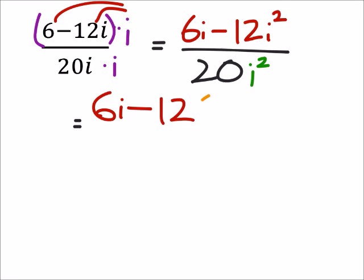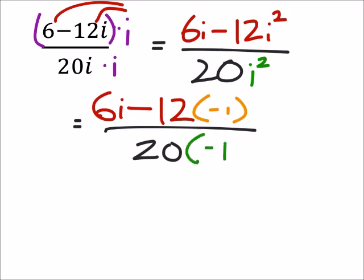And that i squared is going to become a negative one. And this is all over 20 times that i squared which also becomes a negative one. So this would be 6i, now I've got plus 12, all over a negative 20.